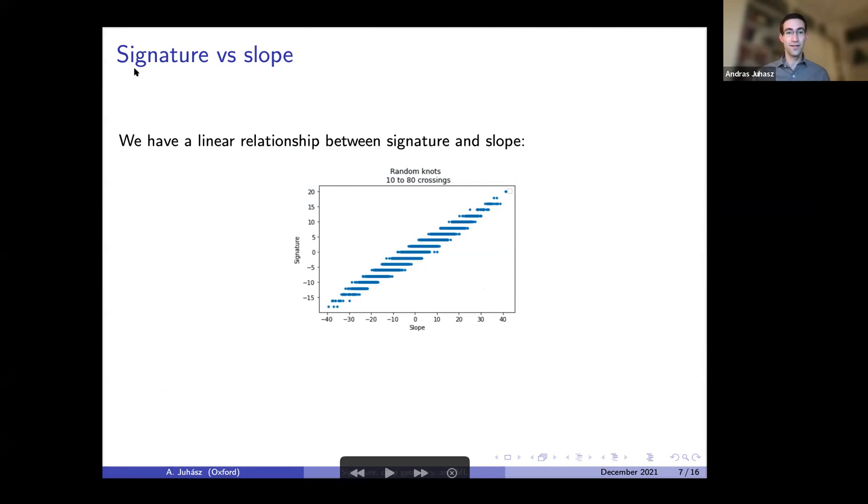If you plot signature versus slope, you can observe an approximately linear relationship between the slope and signature. This is for random knots for 10 to 80 crossings. When I take crossing number, I mean the crossing number in the SnapPy simplified form; the actual crossing number, of course, might be smaller. And the question is, what's the error? Clearly there is some error term.